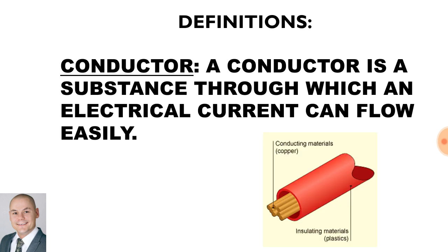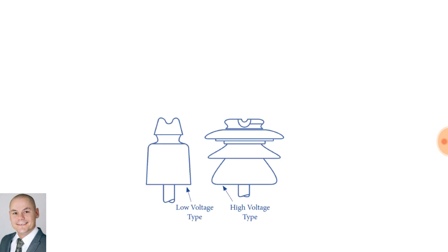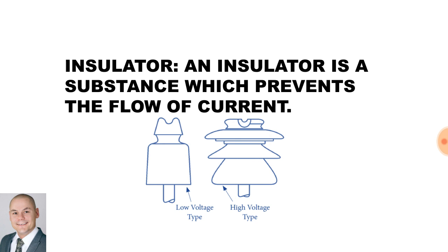The definition for a conductor, a conductor is a substance through which an electrical current can flow through easily. Here we have an insulator which is used for high voltage distribution. An insulator is a substance which prevents the flow of current.